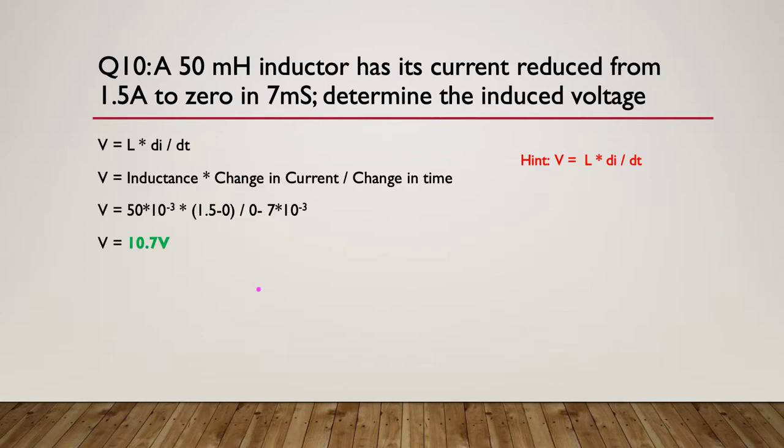And here's our answer. So again, inductance multiplied by change in current divided by change in time. You just need to know what we have. So 50 times 10 to the minus 3, that takes care of our millihenries. 1.5 minus 0 - so we went from 1.5 all the way down to 0, so it's 1.5 minus 0 which is 1.5. And we did it all in 7 milliseconds, so we went from 0 seconds to 7 milliseconds, so it's 0 minus 7 times 10 to the minus 3. Put those together, multiply by our 50 times 10 to the minus 3, and of course we end up with 10.7 volts.